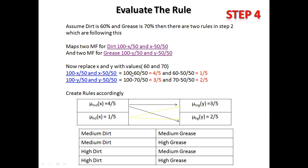Substituting x = 60 and y = 70, we get membership values 4/5, 1/5 for dirt and 3/5, 2/5 for grease. We then take the Cartesian product of these membership values to form four rules: medium dirt with medium grease, medium dirt with high grease, high dirt with medium grease, and high dirt with high grease.